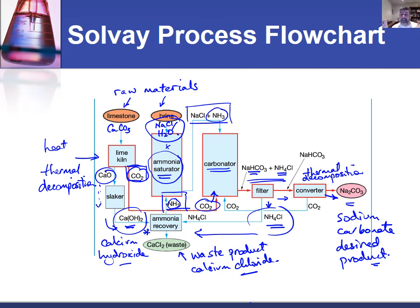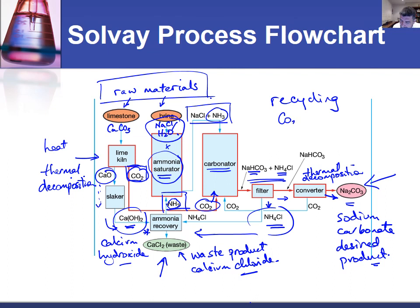Your flowchart doesn't need to be identical, but it should identify the raw materials, the waste product, the desired product, and the recycling of materials — you can see CO2 is recycled and ammonia is recycled through this process. It should also give a brief identification of the processes occurring in each place. There are lots of different flowchart images in your textbook and on the internet for the Solvay process — it's just important that you can reproduce one and use it to explain the process. In subsequent videos we'll go through it in more detail. Thanks for watching.